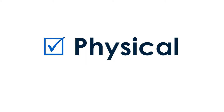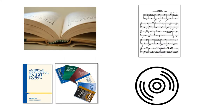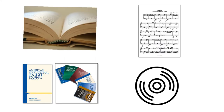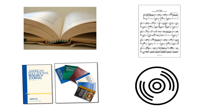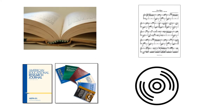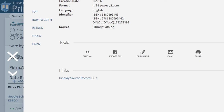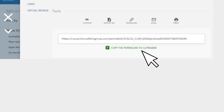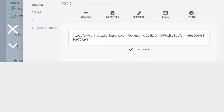For physical items like print books, print journals, print music, and CDs or DVDs, click Permalink under Tools in Primo, then click Copy the permalink, and paste it into a Word document.